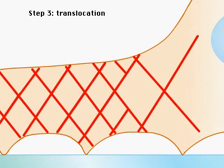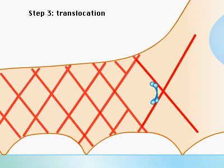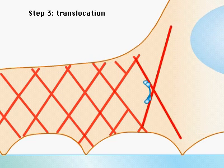The third stage is translocation of the cell body. This is accomplished by contraction of actin and myosin bundles at the lamellopod cell body border.